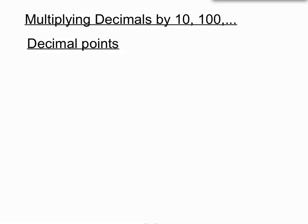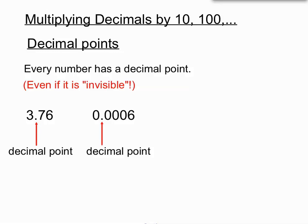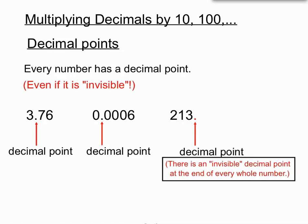Now let's establish something about decimal points first. Every number has a decimal point, even if it's invisible. 3.76 has a decimal point after the 3. Even 0.0006 has a decimal point. In the number 213, there doesn't seem to be a decimal point, but there's an invisible decimal point at the end of the 3.